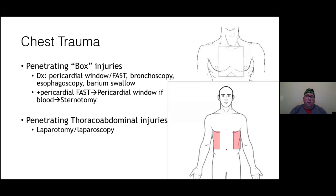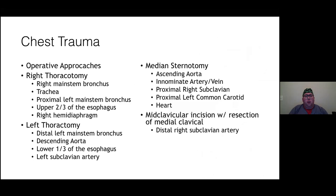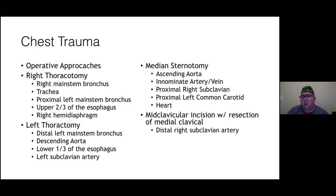Operative approaches are high-yield and commonly tested — this is rote memorization. Right thoracotomy accesses the right main stem bronchus, left main stem bronchus, trachea, upper two-thirds of the esophagus, and right hemidiaphragm. Left thoracotomy accesses the left main stem bronchus, descending aorta, lower one-third of the esophagus, and left subclavian artery. Median sternotomy accesses the ascending aorta, innominate artery and vein, proximal right subclavian, proximal left common carotid, and the heart. The midclavicular incision with medial clavicle resection is for the distal right subclavian artery.